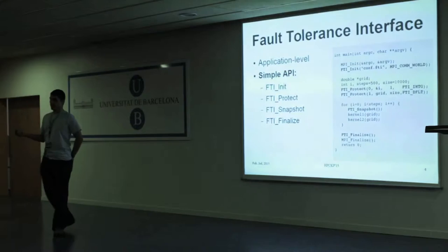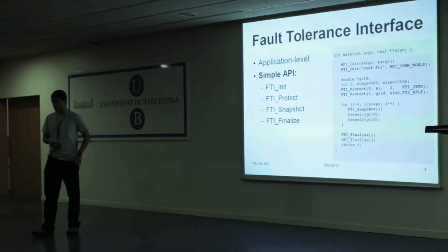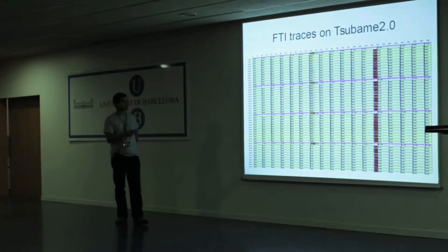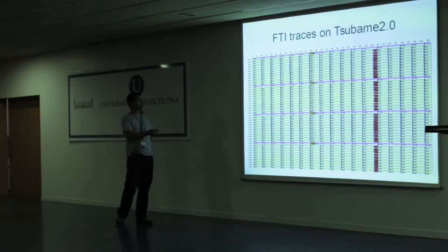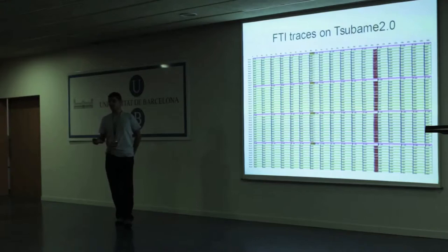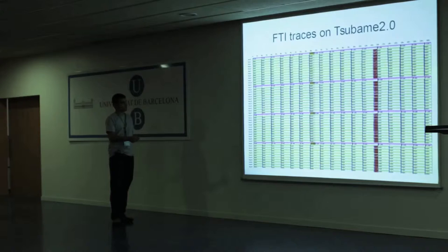FTI offers four levels of checkpointing, which I'm going to show with traces from Tsubame 2.0 — the supercomputer at Tokyo Tech. In each line you have a process. You have four nodes here, each node has 12 processes, because we have two sockets of six cores.